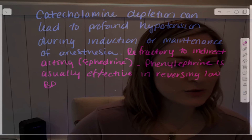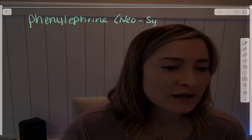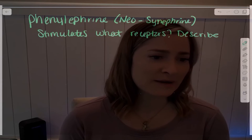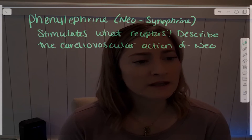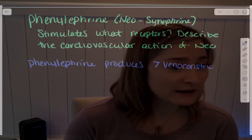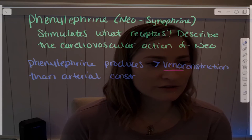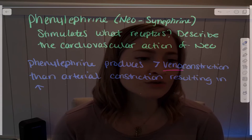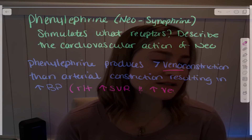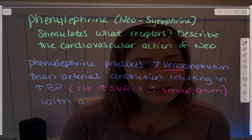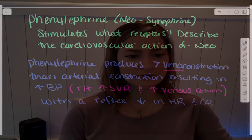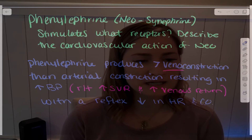Phenylephrine, also known as neosynephrine or NEO, stimulates alpha-1 adrenergic receptors. Phenylephrine produces greater venoconstriction than arterial constriction, resulting in elevated blood pressure due to both an increase in SVR and an increase in venous return. There is a reflex decrease in heart rate and cardiac output. I want to explain the reflex decrease in heart rate in a little more detail.